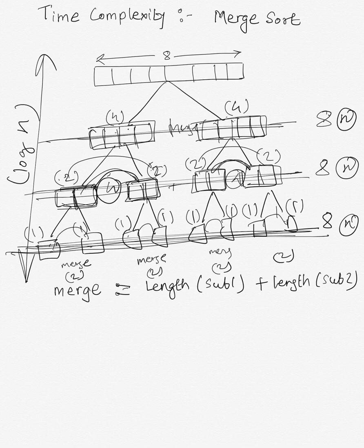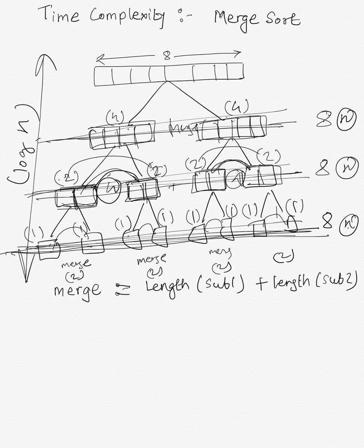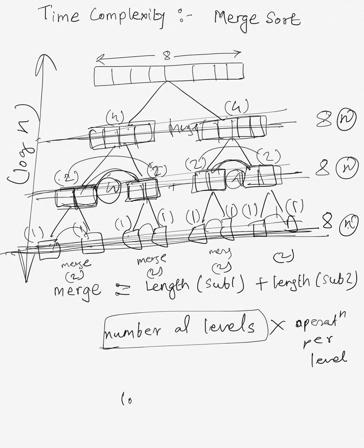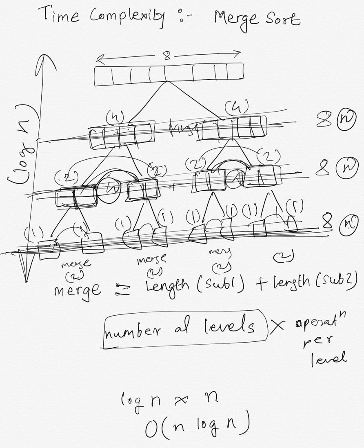The number of operations performed on every level is n, and the number of levels is log n. So the time complexity of merge sort equals the number of levels multiplied by the number of operations per level, which is log n multiplied by n. Hence the time complexity is O(n log n). This is the basic idea behind the time complexity of merge sort.